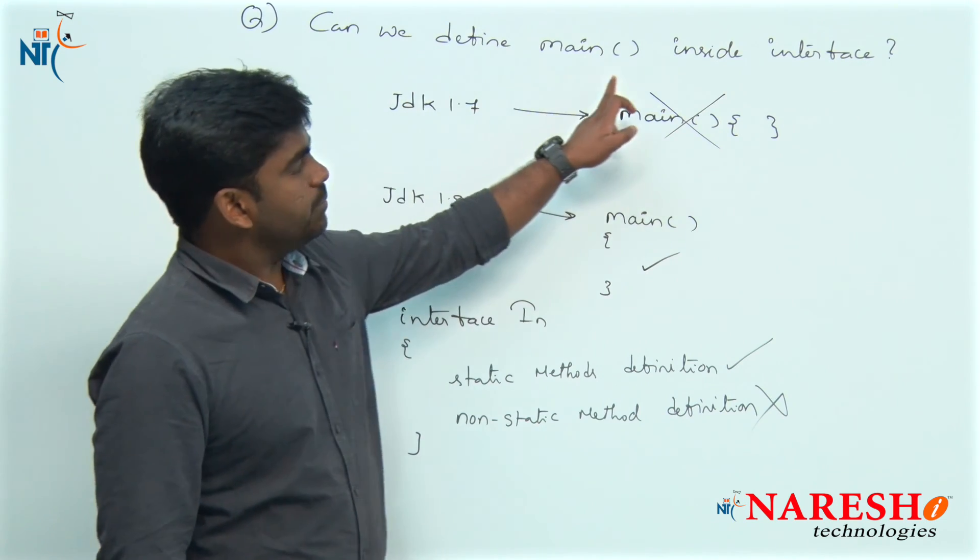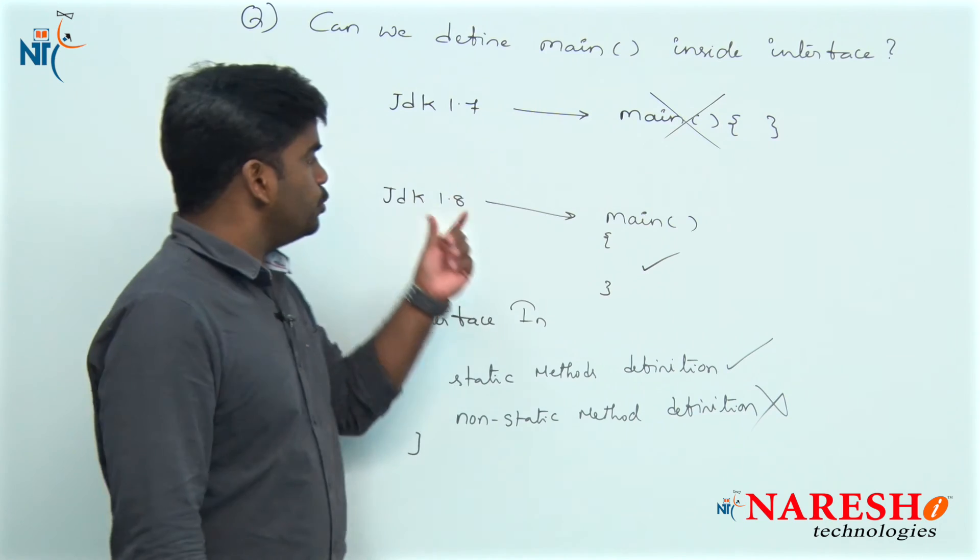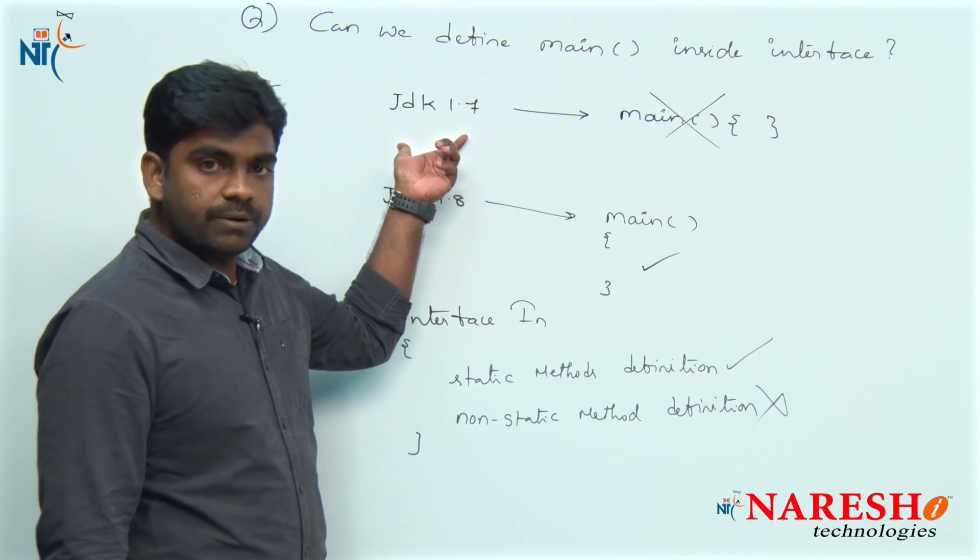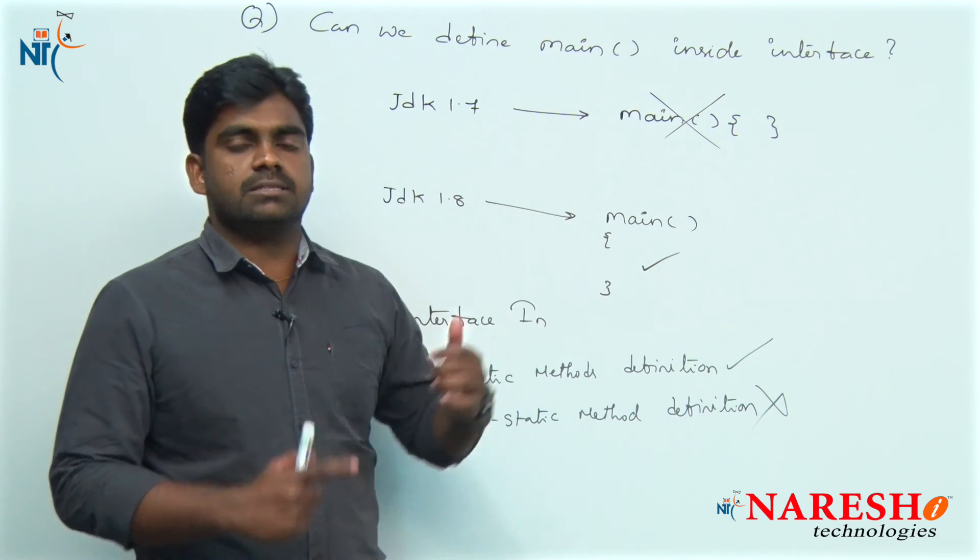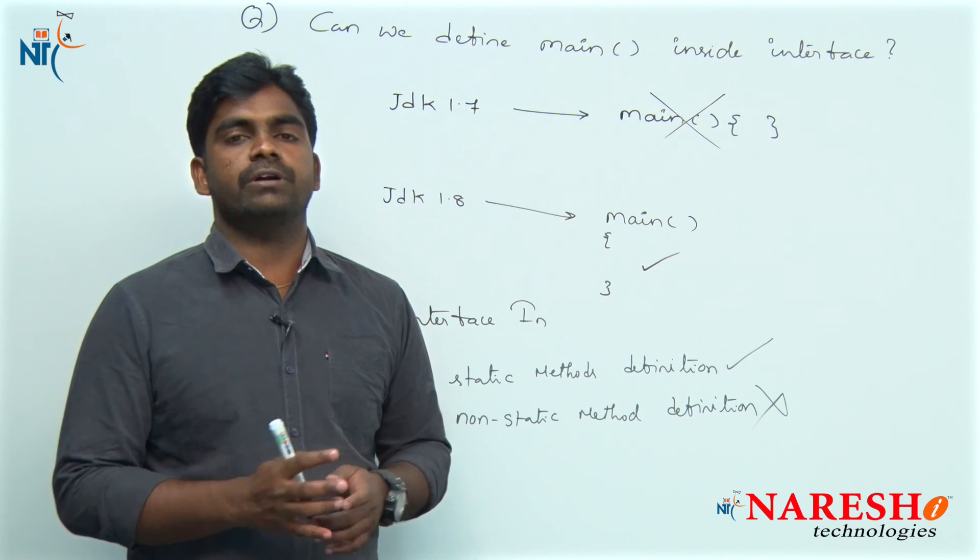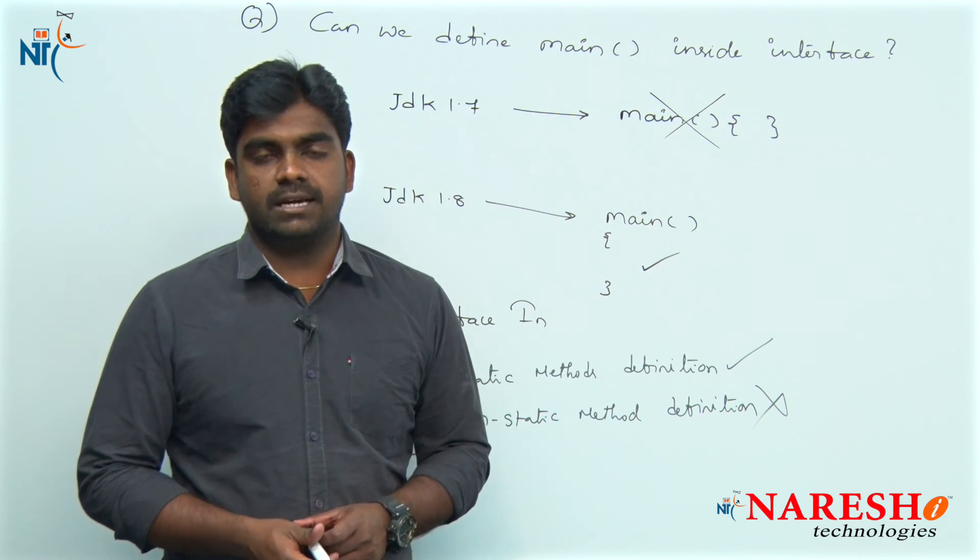So, can we define main method inside the interface? In the new version it is allowed, but up to JDK 1.7 we cannot define either static or non-static methods. Hope you understood well. For more videos, please subscribe to Naresh IT channel. Thank you.